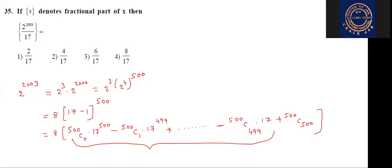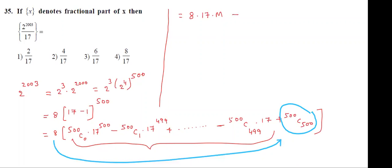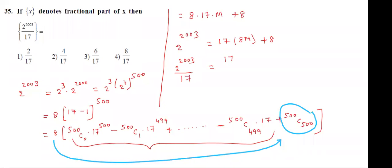So finally, I'm writing here: taking 17 common, the remaining part gives some integer M. But here 500C500 has value 1, multiplied with 8 — what we get is minus 8. So 2 power 2003 is equal to 17 into 8M plus 8.